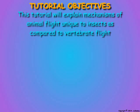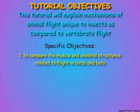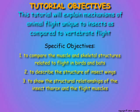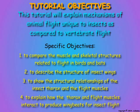The objective of this tutorial is to explain mechanisms of animal flight unique to insects as compared to vertebrate flight. Specific objectives are: first, to provide a comparative overview of the body structures and muscles that allow for flight in birds and bats; second, to describe the structure of insect wings; third, to show the structural relationships of the insect thorax and flight muscles; and finally, to explain how the thorax and flight muscles of insects produce the wing beats during flight. The aerodynamics of flight will not be discussed.